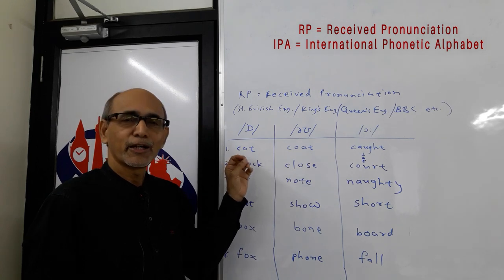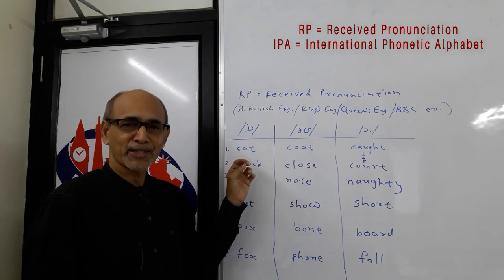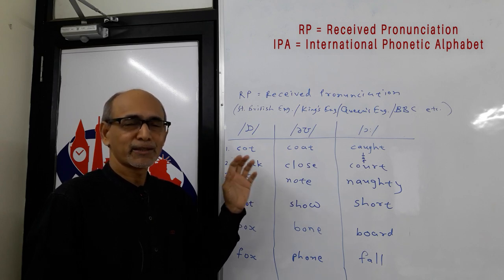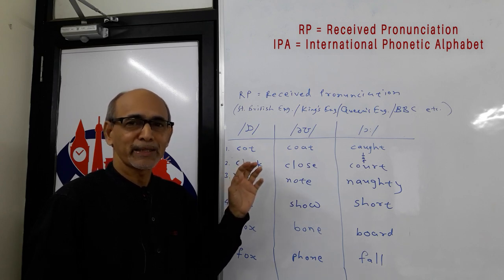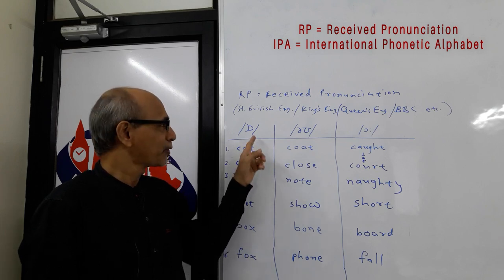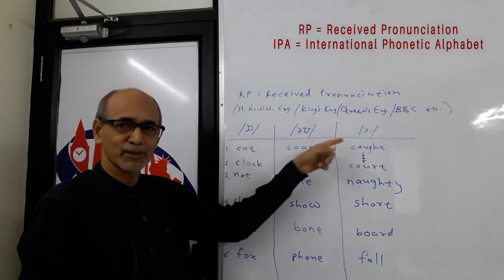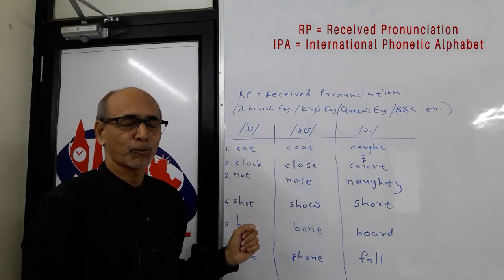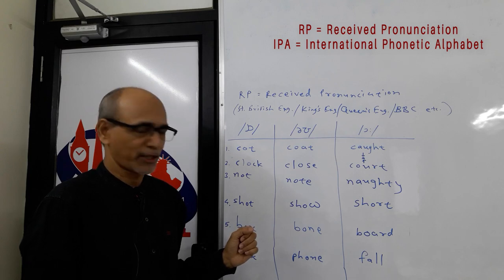If you look up in authentic dictionaries, pronunciations are given using phonemic symbols, and these are called IPA — International Phonetic Alphabet. So we will use those symbols to practice these three important sounds in English.